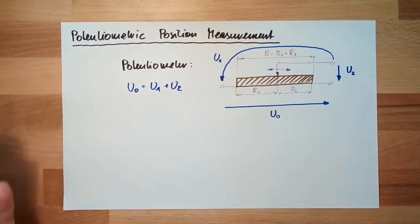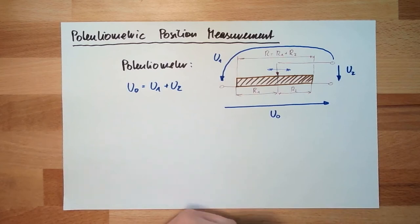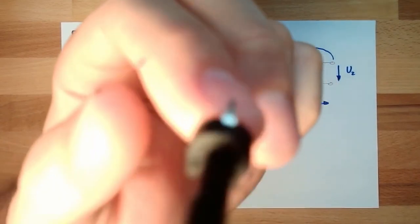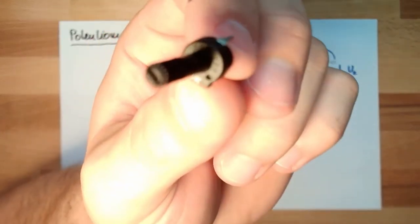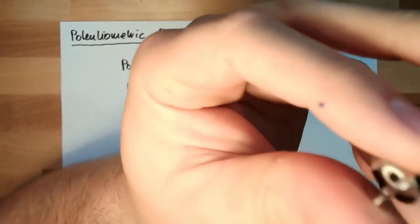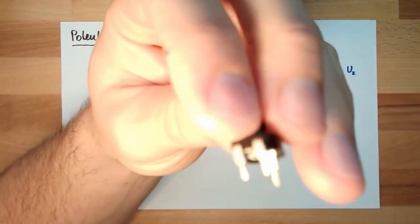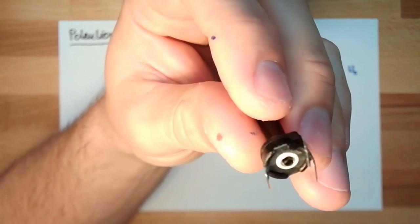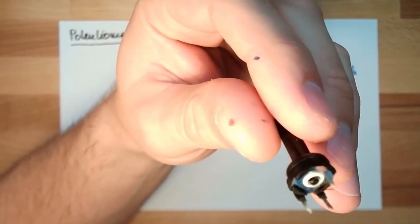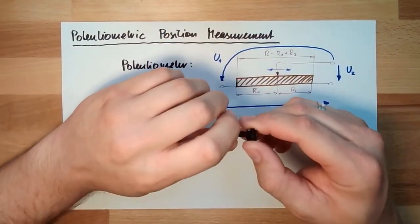That's it, potentiometric position measurement. There's nothing really special about it. We even used it in our Arduino course. This was our watt centimeter. These two contacts, the contacts which are together, these are the outer contacts, and the moving contact was the one on the opposite side.